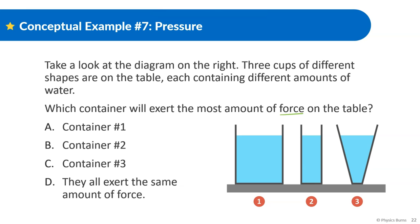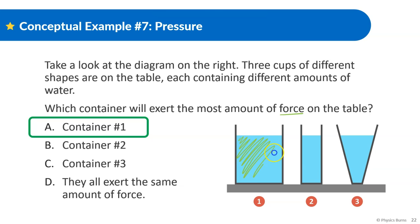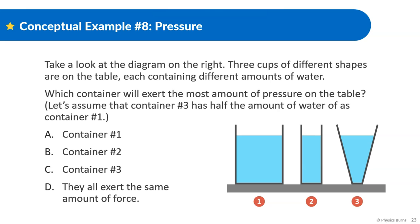The answer is container one, and it should be fairly obvious. Container one has the most amount of water, so it has the most amount of mass, and since it has the most mass it's going to have the most weight, which is the force of gravity acting on it.